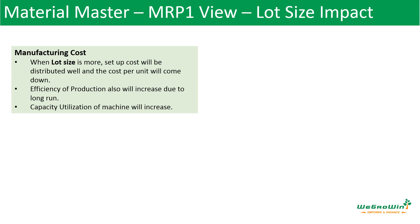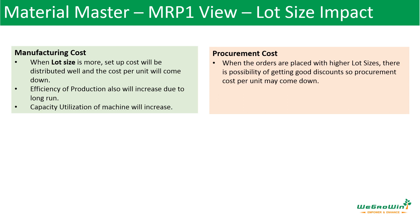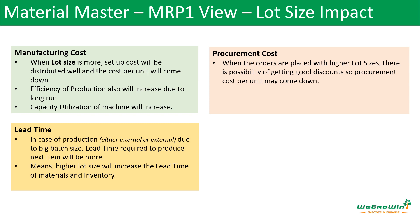When the lot size is more, the setup cost will be distributed well and the cost per unit will come down, so manufacturing will try to have more lot size. The efficiency of production will increase due to the long run, and capacity utilization of the machine will be better. Similarly for procurement, when they place orders with larger lot sizes — for example, instead of placing a hundred as an order if they place a thousand — they can get a good discount, so the procurement cost per unit will come down.